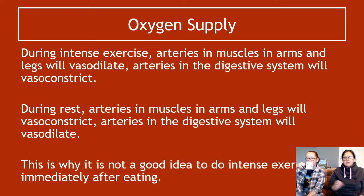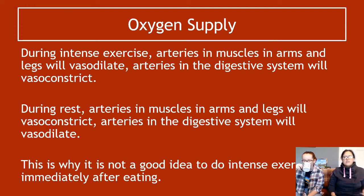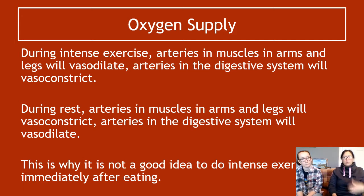Another example of how vasodilation and vasoconstriction helps you is oxygen supply. If you are intensely exercising, the arteries in your muscles, arms and legs will vasodilate to supply those muscles with oxygen and nutrients for aerobic respiration or for the lactate fermentation pathway. During rest, arteries in muscles and arms and legs will vasoconstrict, and arteries in the digestive system will vasodilate to supply the digestive system with oxygen and nutrients. This is why intense exercise immediately after eating can cause vomiting — blood flow is prioritized to arms and legs, the digestive system gets less supply, and your body's only response to undigested food is to get rid of it.